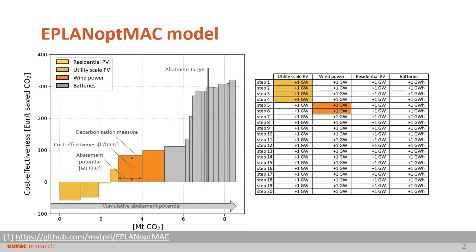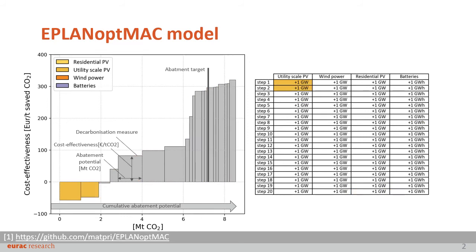The marginal abatement cost curve provides this information. Our model, at each step, evaluates the different decarbonization measures and selects the one with the lowest cost-effectiveness, proceeding like that until the final MAC curve is created.